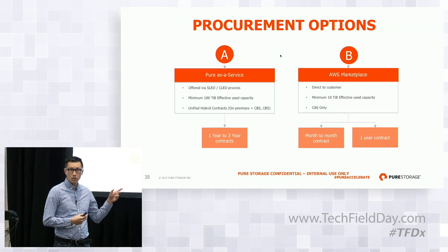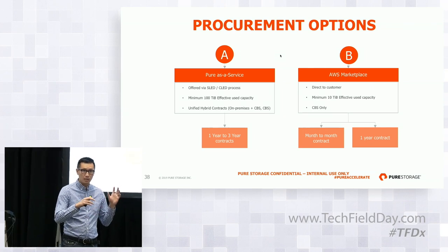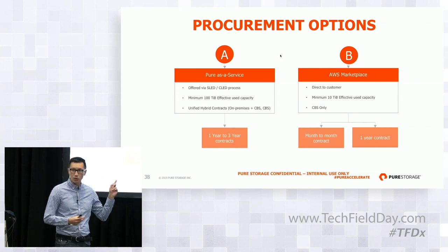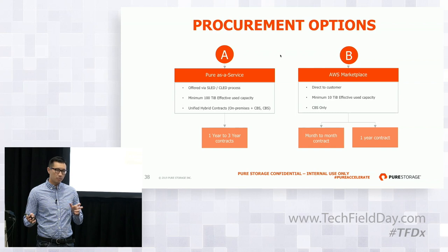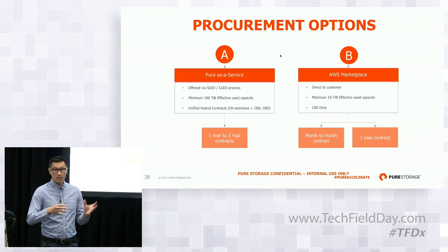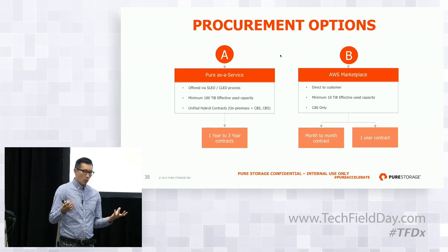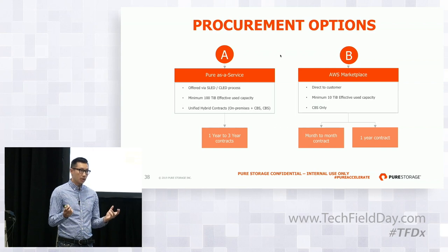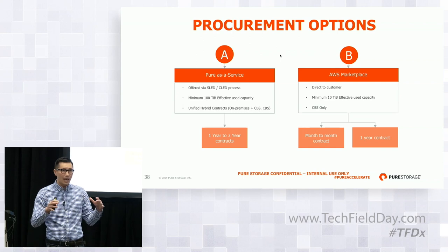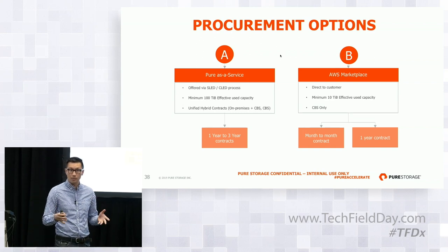Option B is the AWS Marketplace, where customers can go directly to AWS and just subscribe to our service. Going back to option A — Pure as a Service — for those who don't know what that is, previous to the new branding it was called ES2, Evergreen Storage Service. That came before even CloudBlock Store and gave customers the ability to consume FlashArray or FlashBlade storage through a subscription rather than purchasing an array.